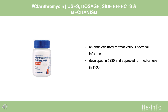Clarithromycin, sold under the brand name Biaxin among others, is an antibiotic used to treat various bacterial infections. This includes strep throat, pneumonia, skin infections, H. pylori infection, and Lyme disease, among others. Clarithromycin is taken by mouth as a pill or liquid. It was developed in 1980 and approved for medical use in 1990. It is on the World Health Organization's list of essential medicines, is available as a generic medication, and is made from erythromycin, chemically known as 6-O-methylerythromycin.